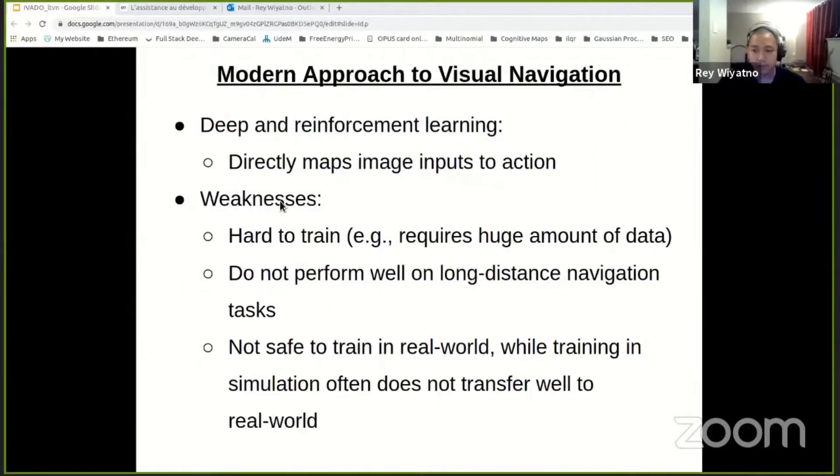So it seems like a learning-based approach using deep and reinforcement learning is a good option to solve this, especially due to their strengths in handling image input. Well, we see several attempts to do this, but they are typically hard to train, do not perform well on long-distance navigation tasks because they are purely reactive.